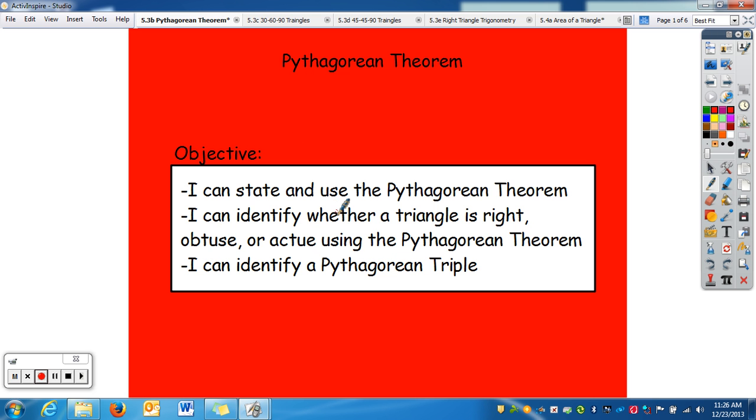You can state and use the Pythagorean Theorem. You can identify whether the triangle is right, obtuse, or acute using Pythagorean Theorem, and you can identify a Pythagorean triple.